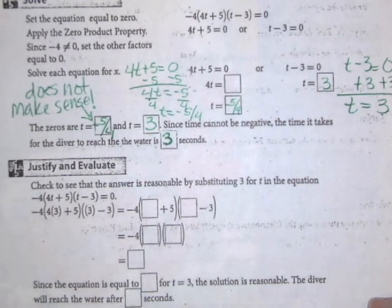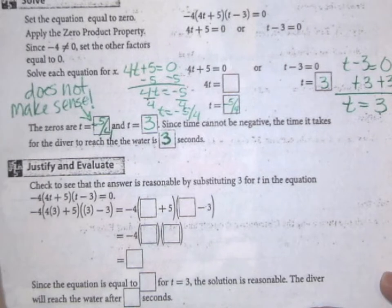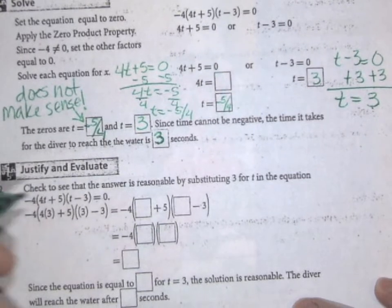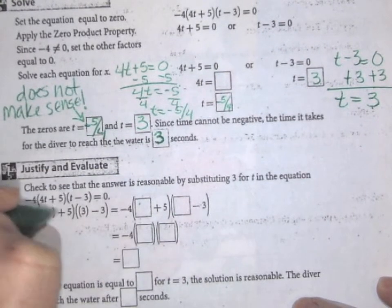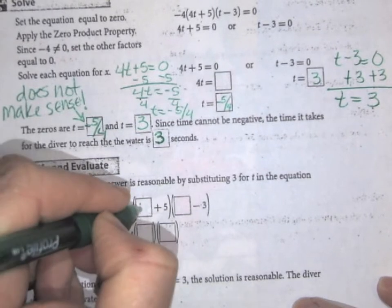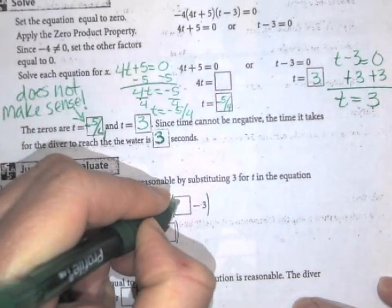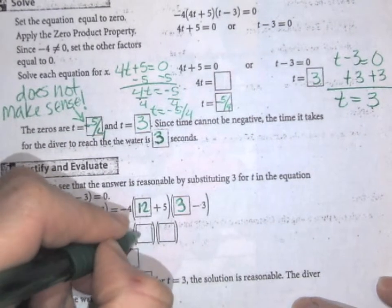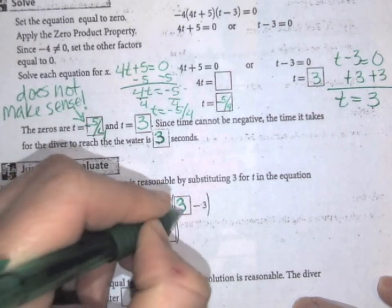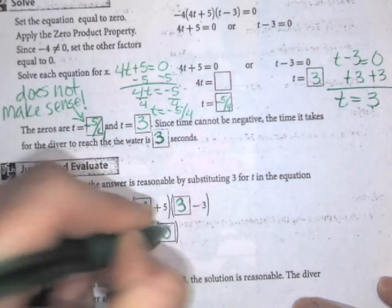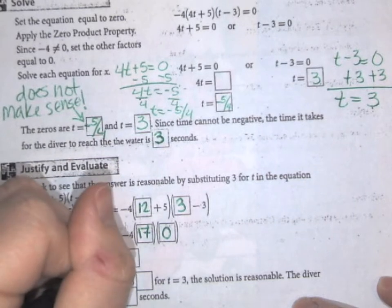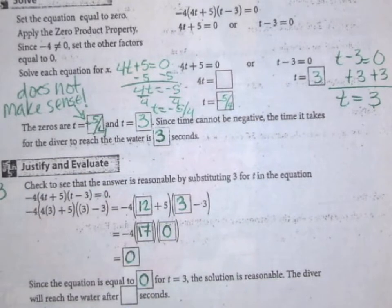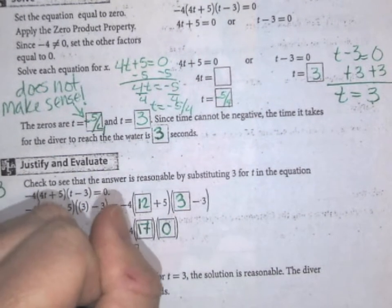Now we can check to see if it's reasonable. We're going to substitute that value of t = 3 into our function and see if the value we get is zero. So we're going to substitute that in and then simplify. Four times three will give us twelve, and the three, the parentheses can go away. So here, this will be twelve plus five is seventeen, three minus three is zero. Anything times zero is zero. Since the equation is equal to zero for t = 3, the solution is reasonable. The diver will reach the water after three seconds.